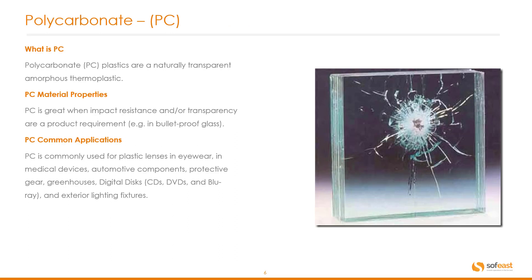Polycarbonate, or PC as it's commonly known. Polycarbonate is a naturally transparent amorphous thermoplastic. It is great when impact resistance and/or transparency are a product requirement — a classic example being bulletproof glass.